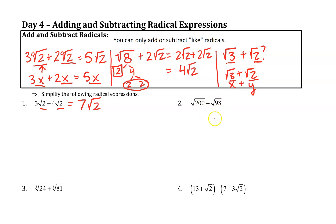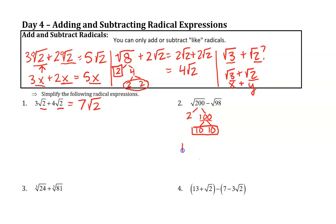Next: square root of 200 minus the square root of 98. We're first going to need to simplify these. 200 is 2 times 100. If you recognize 100 as a perfect square of 10 times 10, you can jump straight to that and not have to go all the way down to prime factors. So here we have a pair of 10s — we'll take those outside the radical, and we have 10 times the square root of 2.